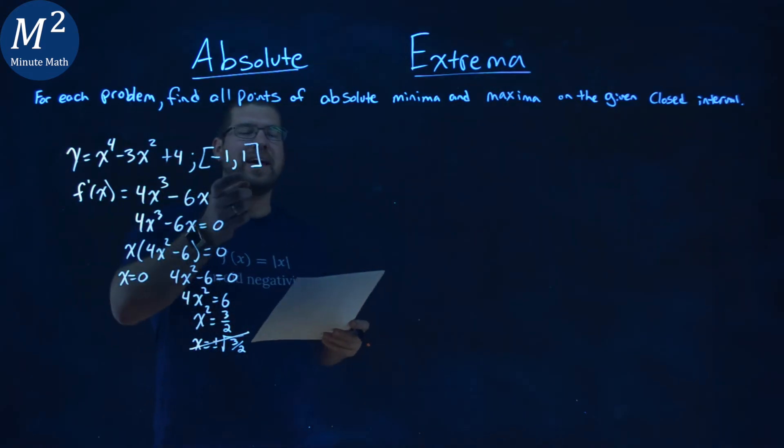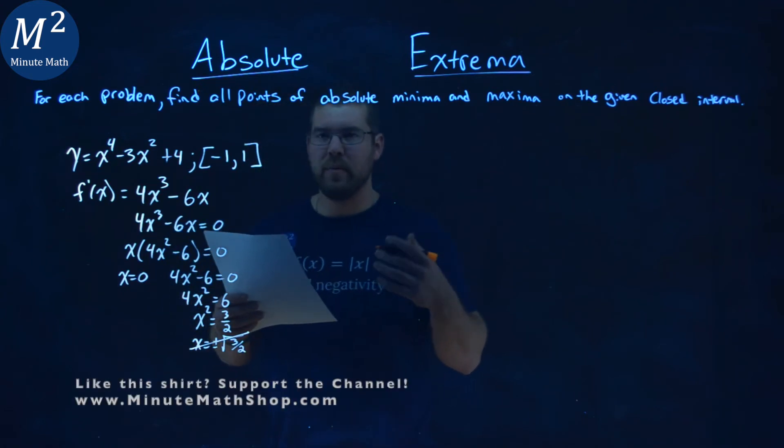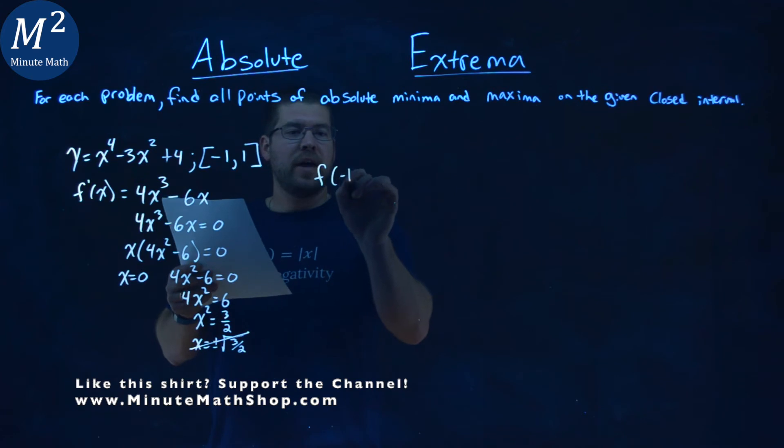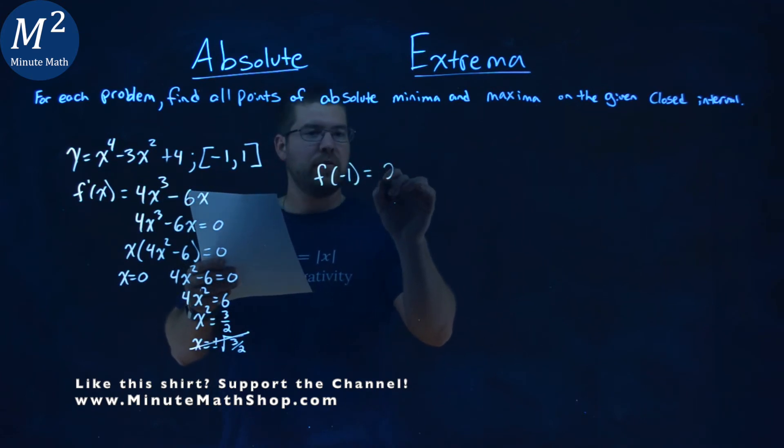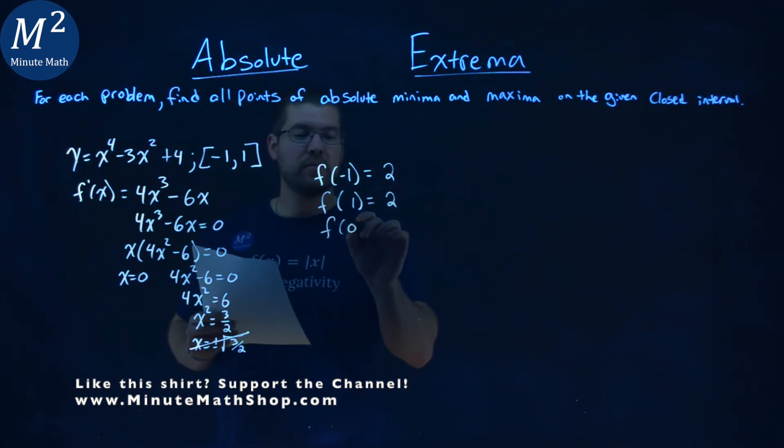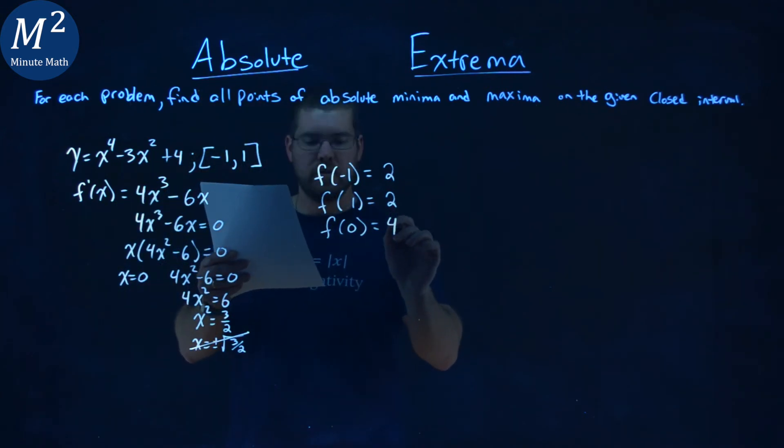We just have to worry about 0 and our endpoints of our domain. Let's go find what happens when we plug them into our original function. f of negative 1 is a positive 2. f of positive 1 is a positive 2 as well. And f of 0, the critical value plugged into our original equation, is a positive 4.